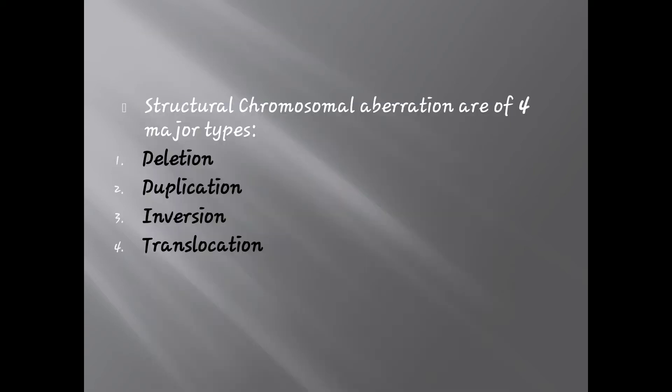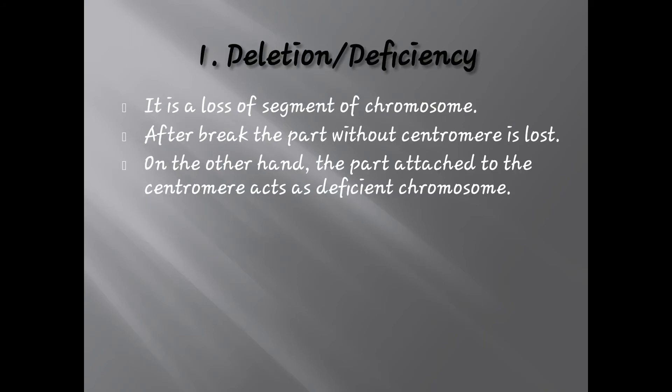Structural chromosomal alterations are of four major types: deletion, duplication, inversion, and translocation. We will see each of them in detail. The first one — deletion, which is also called deficiency — is a loss of a segment of a chromosome.